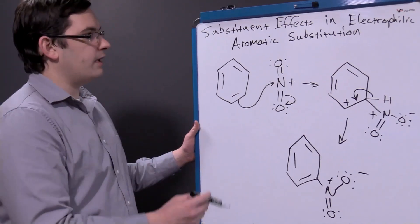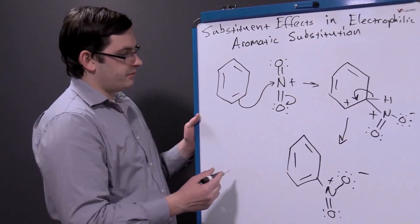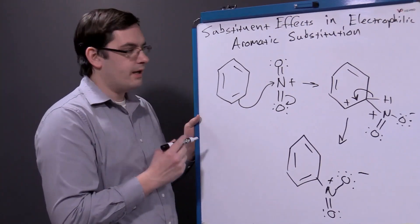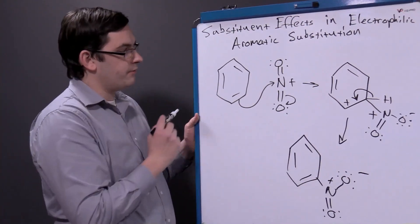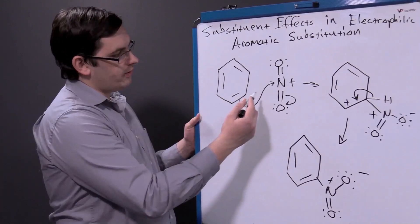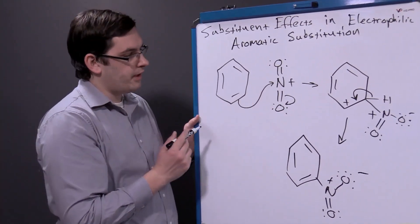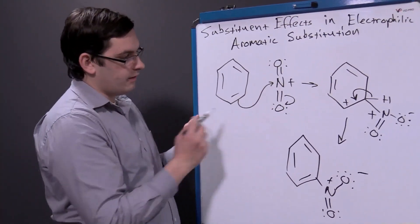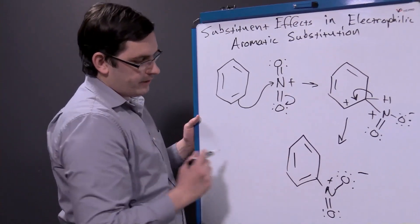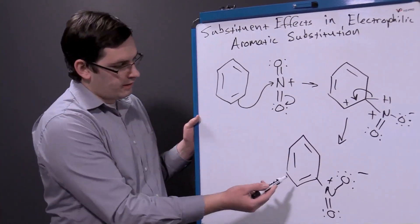Previously we've looked at our electrophilic aromatic substitution reactions. We're using a nucleophilic attack from our electron-rich aromatic ring to our electrophile, in this case our nitronium ion which we get in our nitration reaction, and we're producing our substituted aromatic ring.